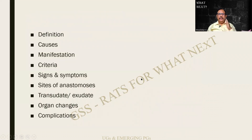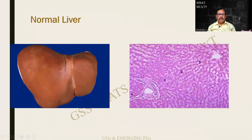Think of the subheadings — they will take you to the answer. The subheadings are: definition, causes, criteria for diagnosis, signs, symptoms, sites of anastomosis, transudate and exudate, organ changes, and complications. This is obviously a liver pathology. The liver has a dusky brown color, a central vein, and radiating hepatocytes with three zones: periportal, central, and perivenular.